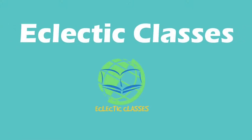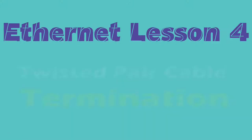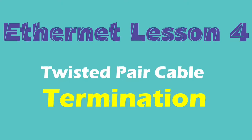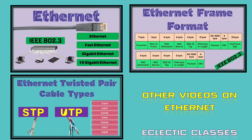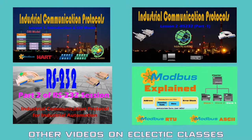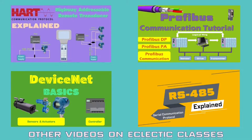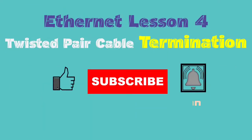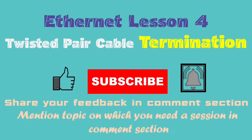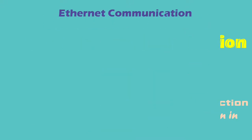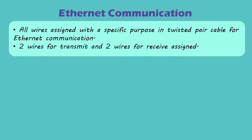Hello and welcome to Eclectic Classes. This is the fourth lesson in the Ethernet tutorial series. Hope you have already gone through my previous videos on Ethernet. You can also go through my other videos on different industrial communication protocols. Now let's start with today's lesson, in which we will study about Ethernet Twisted Pair Cable Termination. All the wires in an Ethernet cable are assigned with a specific purpose.